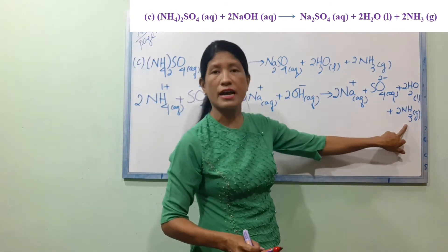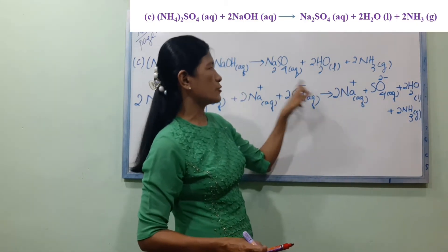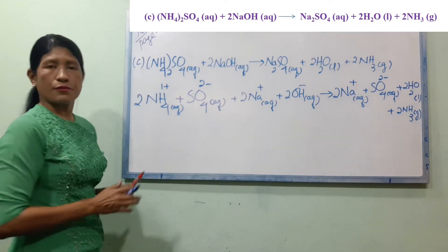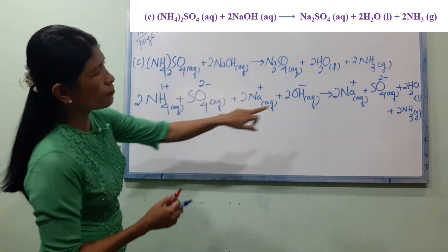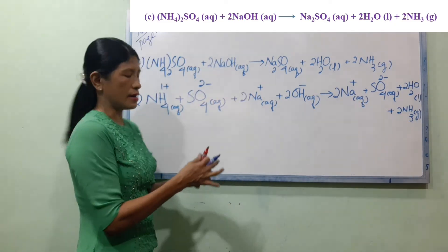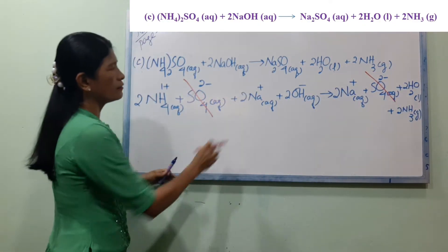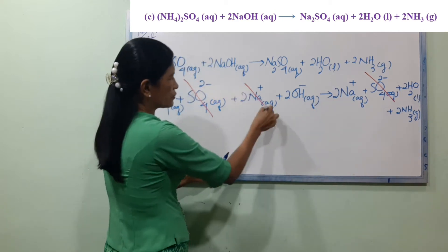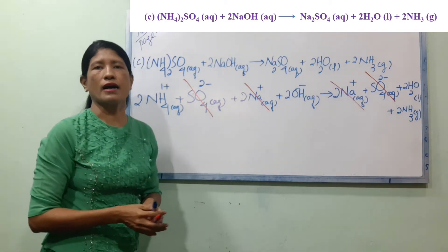So I'm going to use the process for these SO4 2-minus ions. Then I'll use NH4 1-plus. So 2-minus ions. And then we will write 2 Na-plus, and then we will write 2 Na-plus over the net equation, now OH-minus.